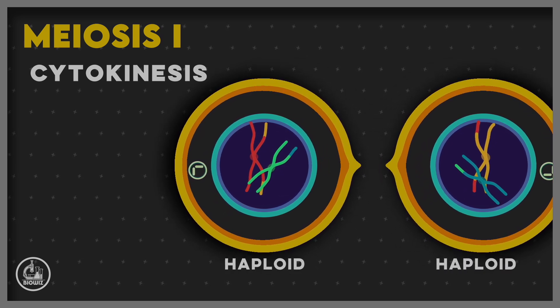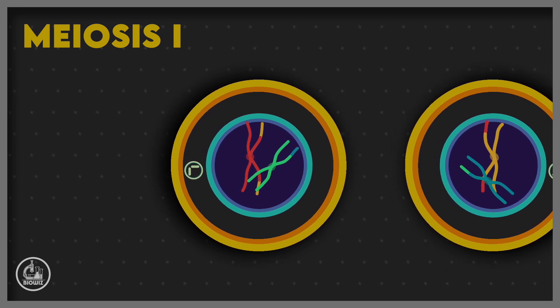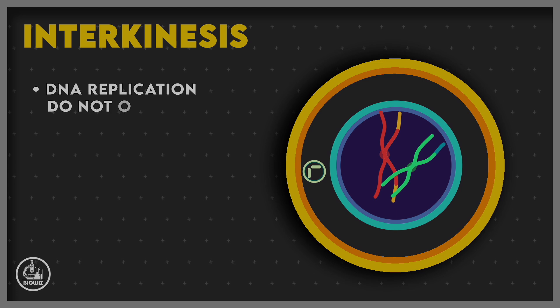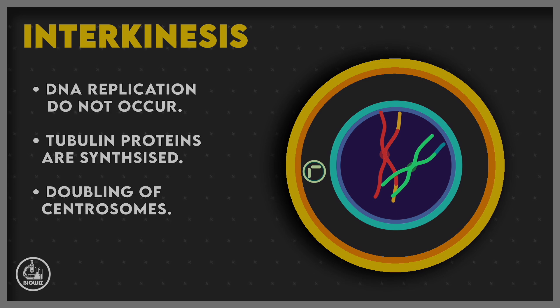The purpose of meiosis II is to separate these two chromatids. Between meiosis I and meiosis II, there is a short phase called interkinesis or intrameiotic interphase. During this phase, centrosomes are doubled, but DNA replication does not occur.